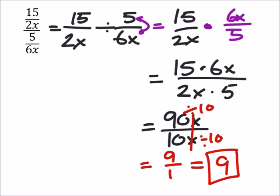That's a really good question. I can split this up as 90 over 10 times x over x. And x divided by x is 1.